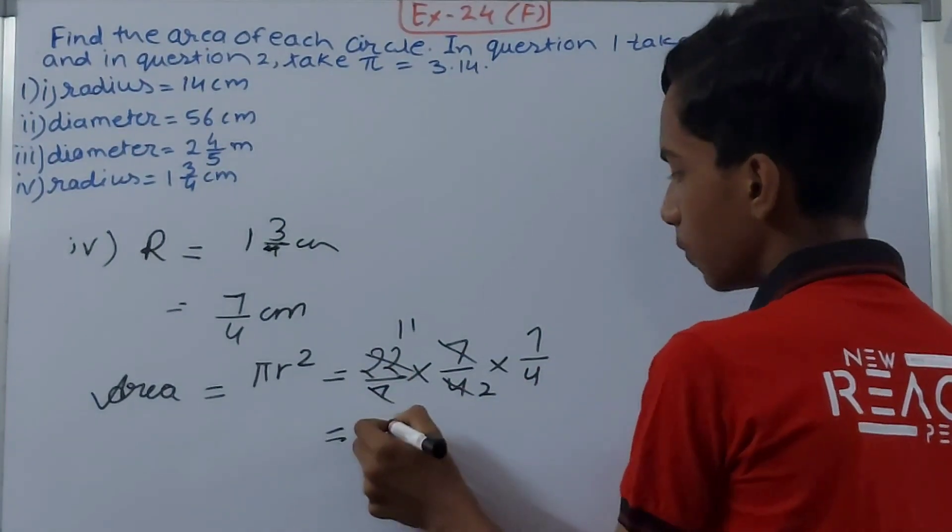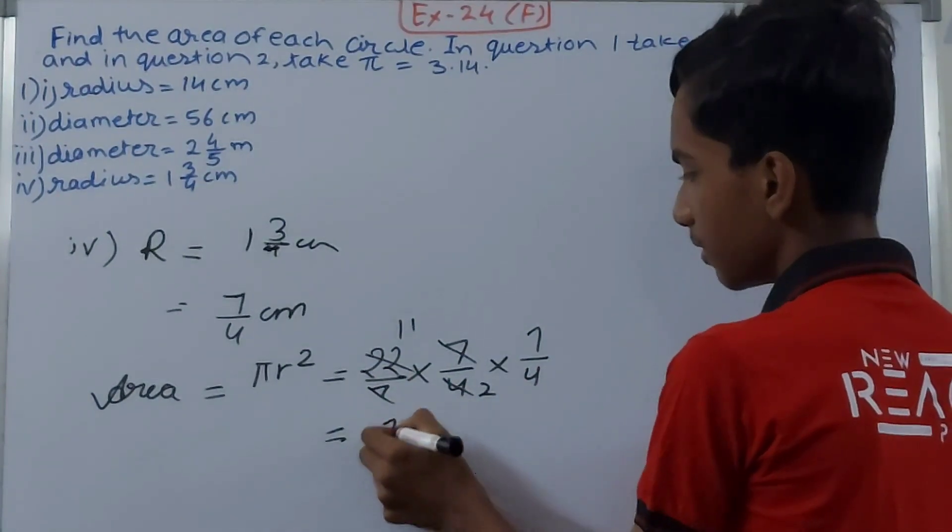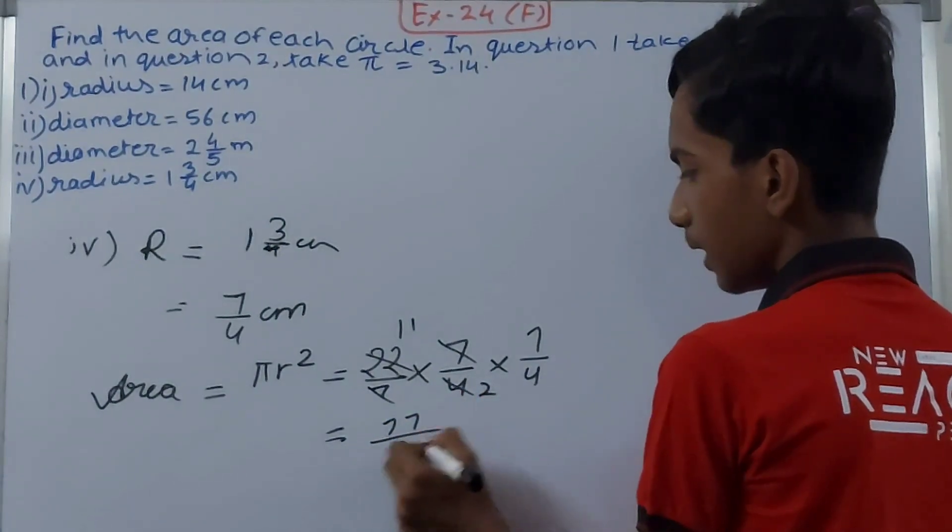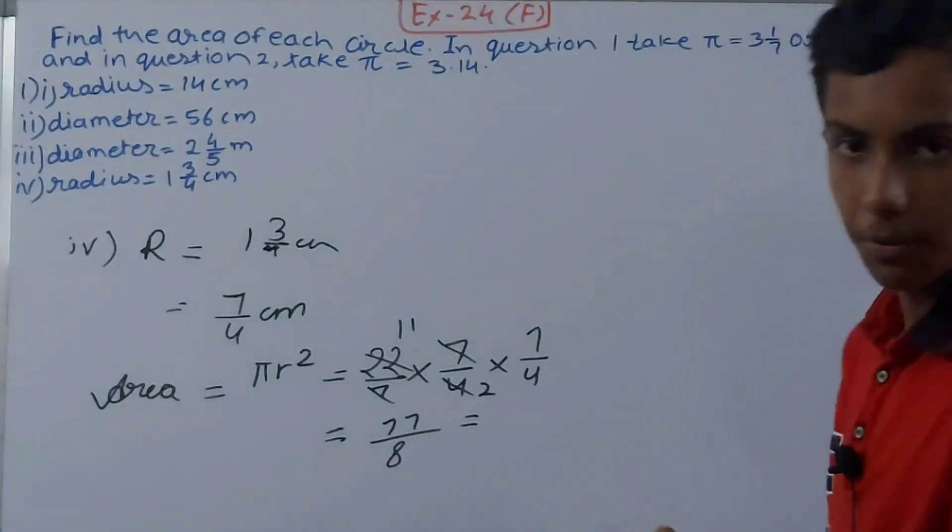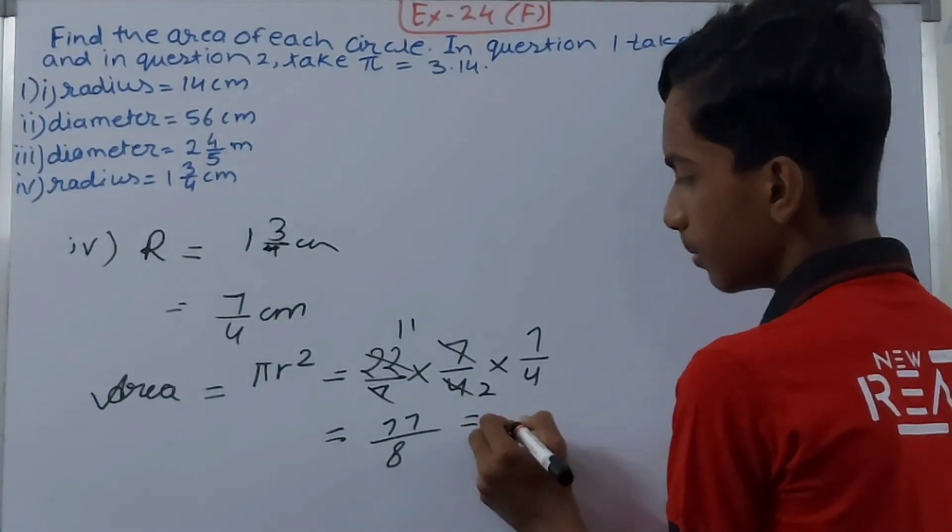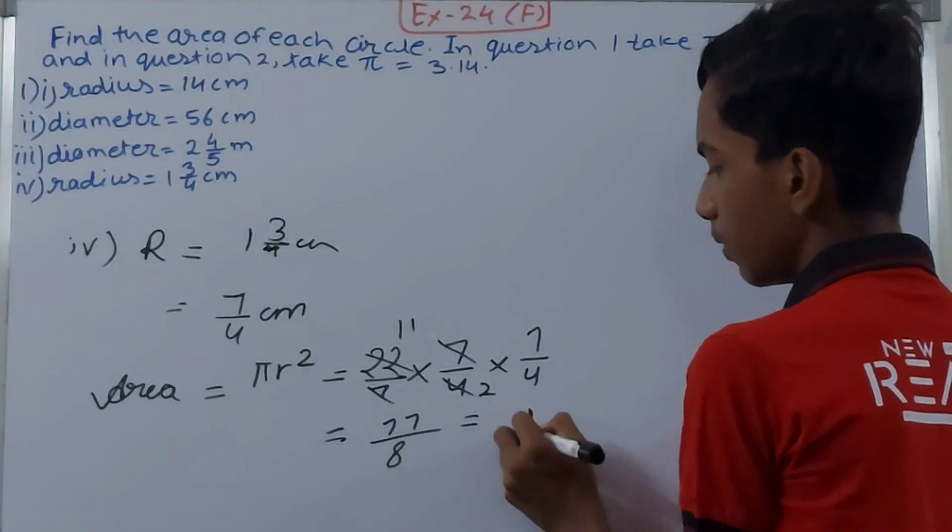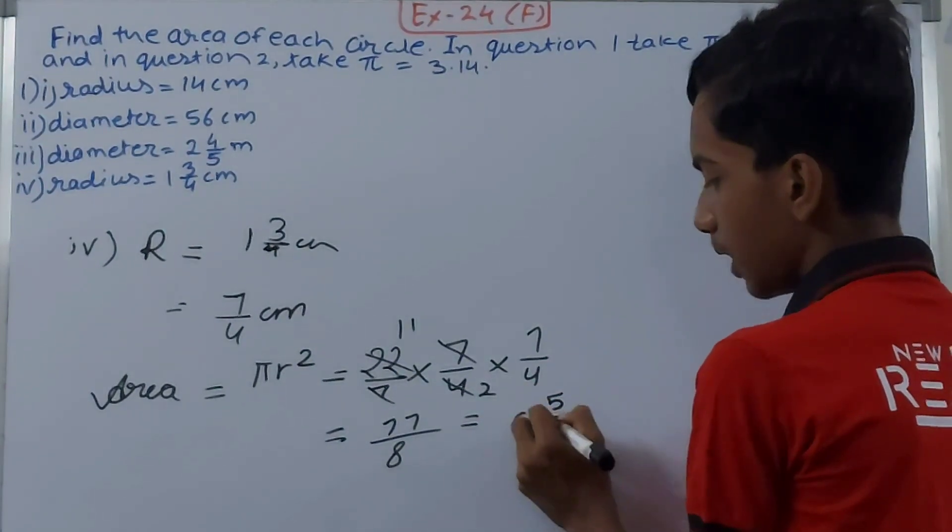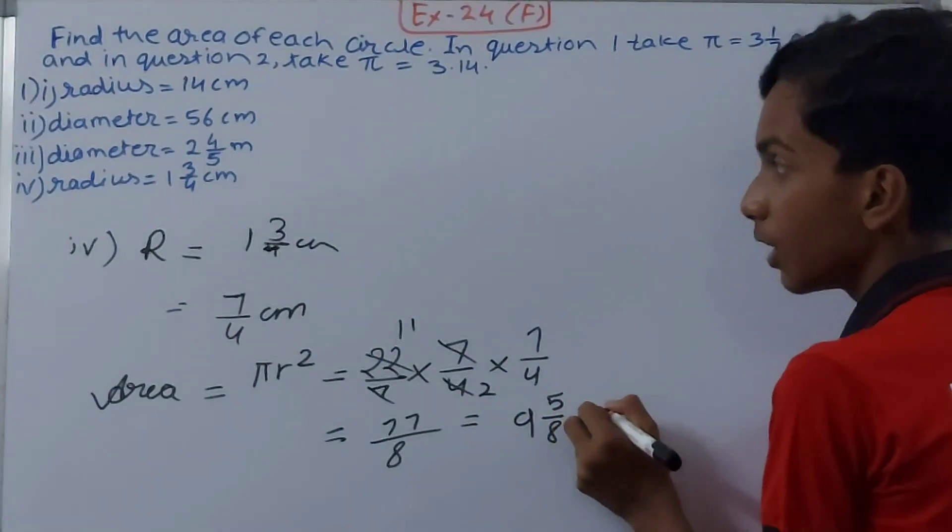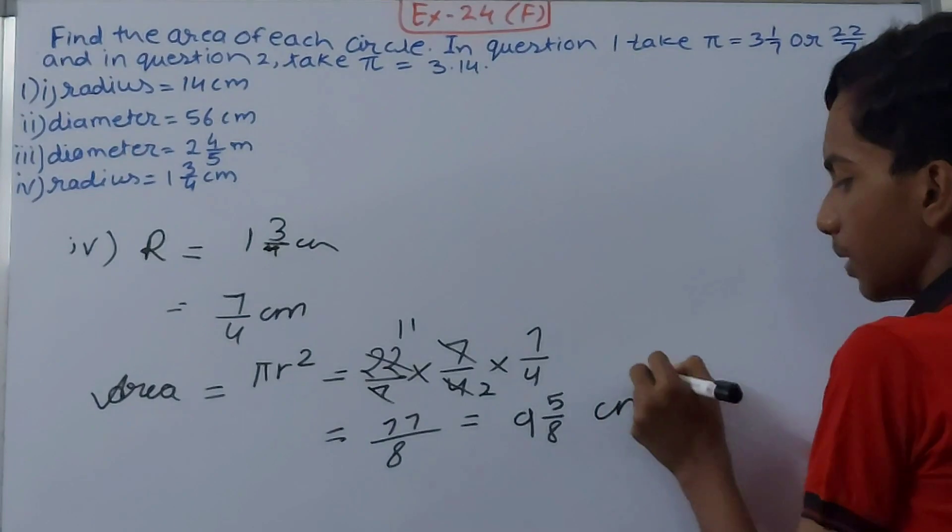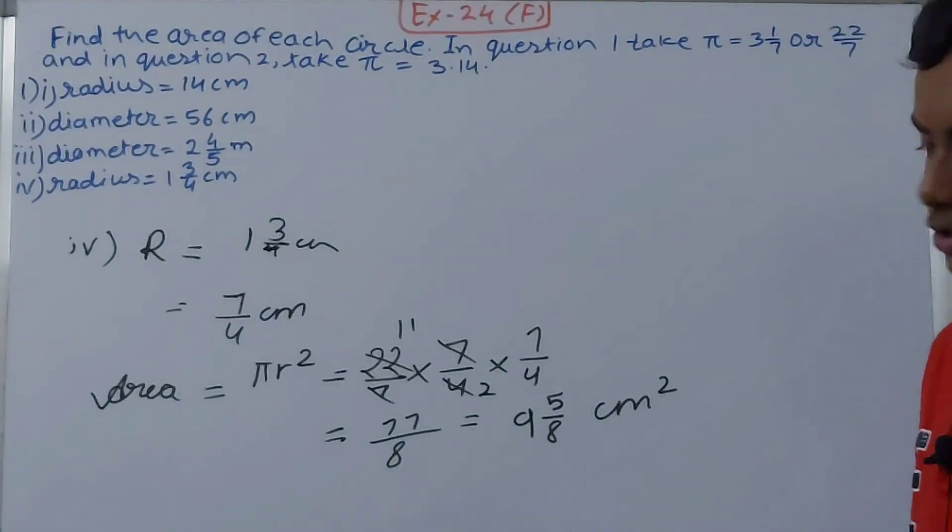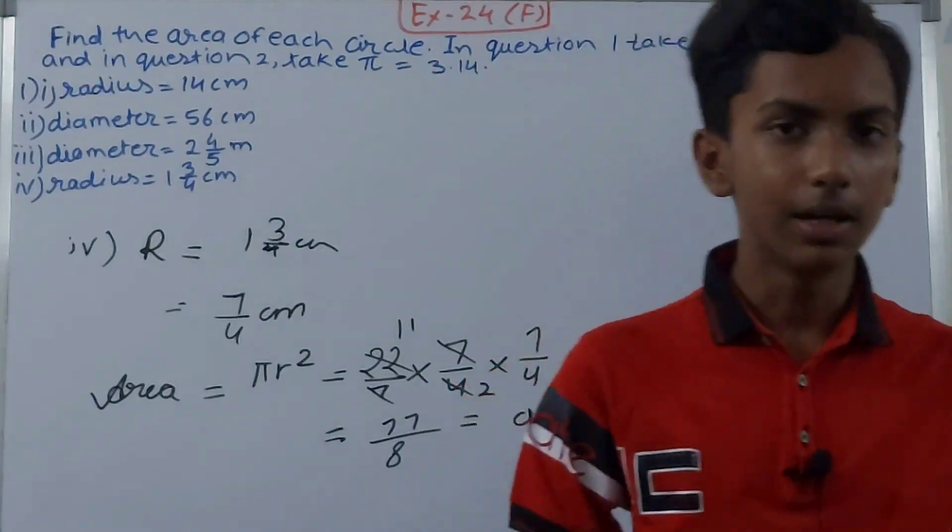Can we cancel it anymore? No. So this will become 7 into 4 is 28, then 77 upon 4 into 2 is 8. Convert this improper fraction to the mixed fraction, so that will become 9 whole 5/8 cm². Always convert improper fraction to mixed fraction for the final answer. Don't leave it as improper fraction.